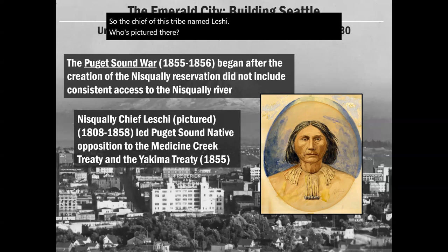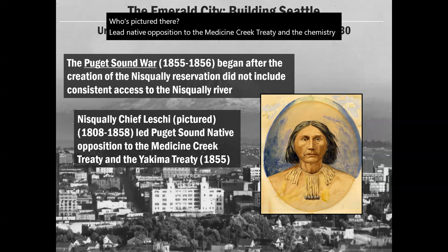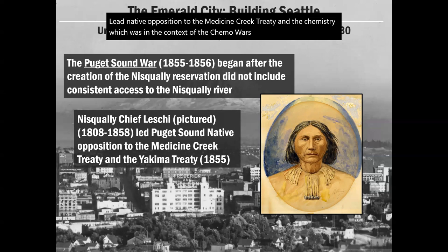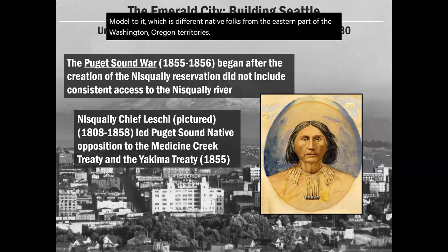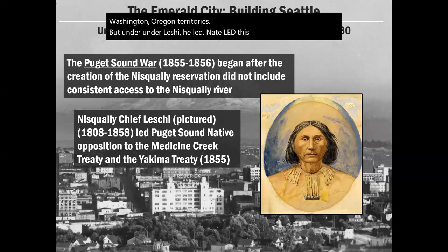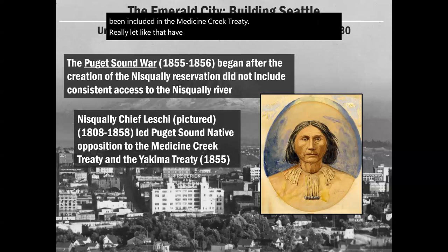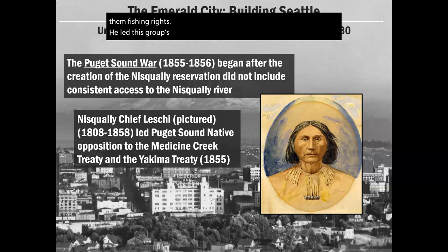The chief of the Nisqually tribe, Leschi — pictured there — led Native opposition to the Medicine Creek Treaty and the Yakima Treaty, which had a very similar model involving Native folks from the eastern part of the Washington and Oregon territories. Under Leschi, his group — which had refused to sign anything that didn't guarantee fishing rights — led resistance to the conditions created by the Medicine Creek Treaty.